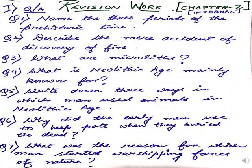In the third question: what are microliths? You will find this on page number 7 where the Mesolithic Age is described. Under that part, in the second paragraph, it says man now started making smaller, sharper, and more efficient tools. Just because of their size, these tools were called microliths. Micro means small and lith means stone.